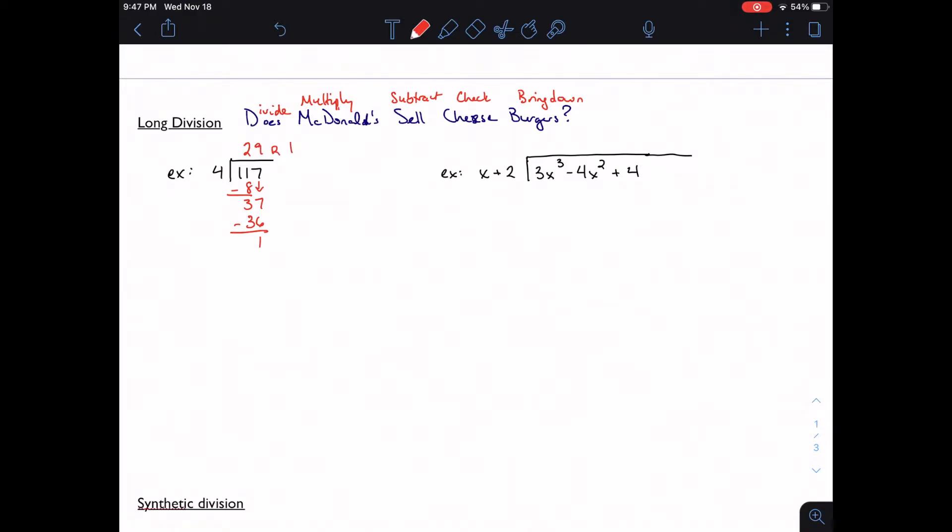If we go back to my division algorithm, this tells me that I can write 117 as 4 times 29 plus 1. And that's where that division algorithm is coming in.